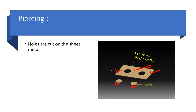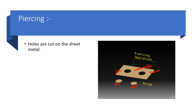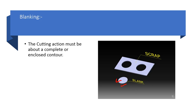In blanking, the cutting action produces a complete enclosed contour. If the circular disk cut out is the useful component, that is the blanking operation. Blanking and piercing are opposites — in blanking the disk is the useful component, while in piercing that disk is scrap or waste material.